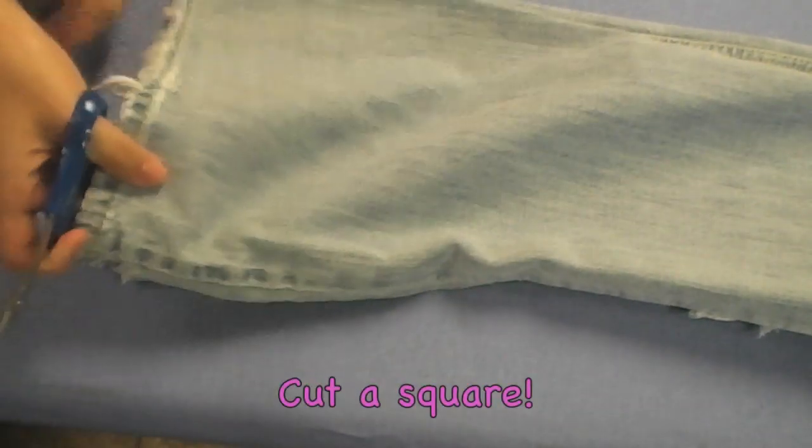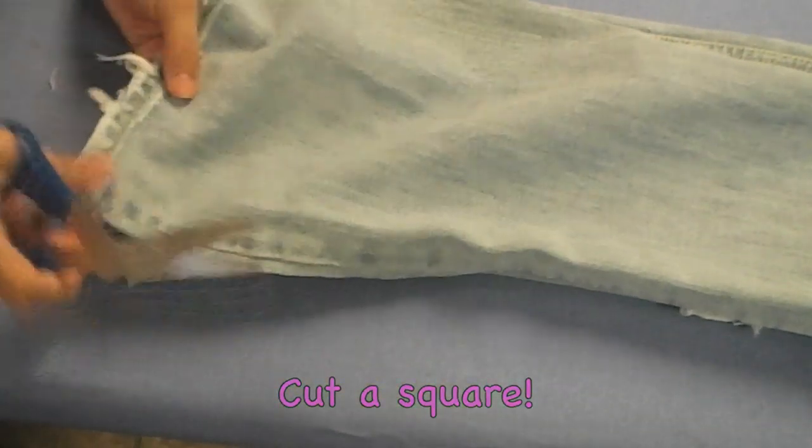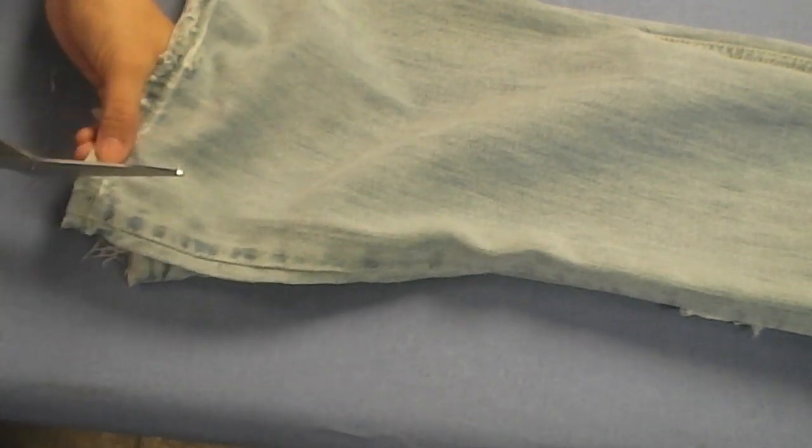And we're just going to repeat the process by cutting a square. Again, the bigger the square, the bigger the bow.